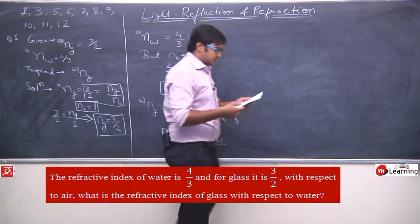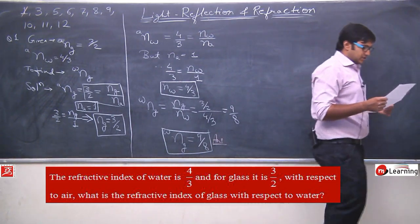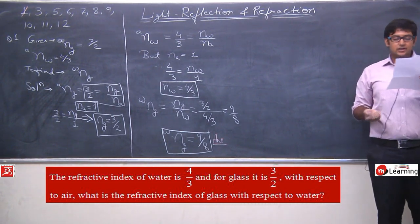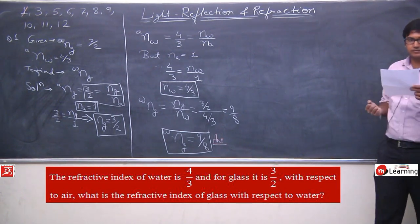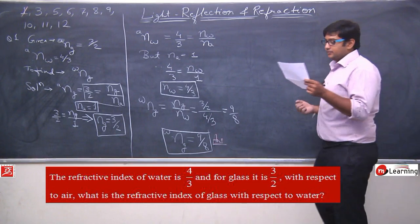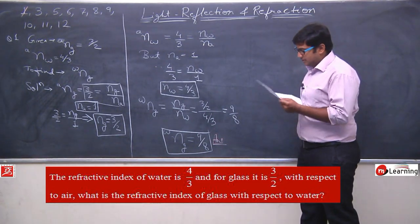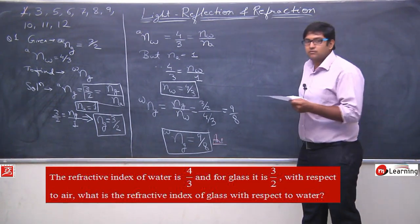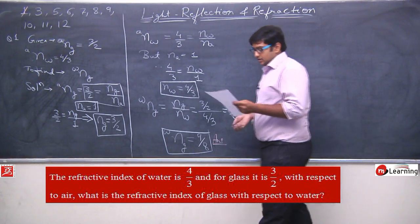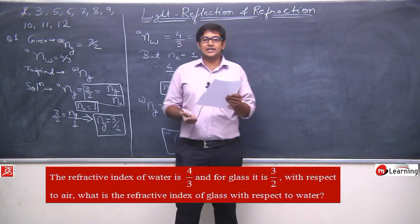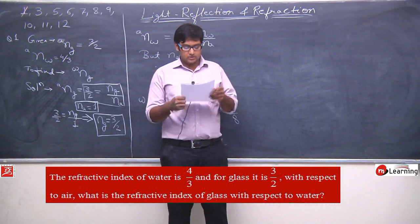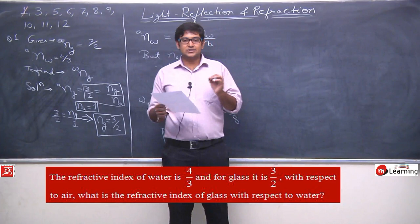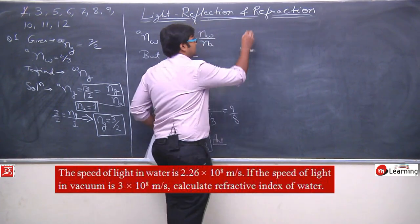Now we will discuss question number 3. It says: the speed of light in water is 2.26 × 10⁸ m/s. If the speed of light in vacuum is 3 × 10⁸ m/s, calculate the refractive index of water.